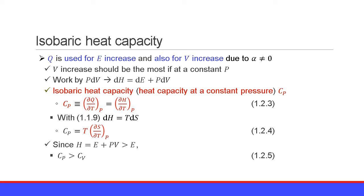The second case is that heat is used for internal energy increase and also for volume increase, due to a non-zero thermal expansion coefficient. The volume increase should be greatest if the pressure P is constant. In this case, work is done equal to P dV — pressure times the volume increase. Therefore, the energy increase equals the internal energy increase plus pressure times volume increase.